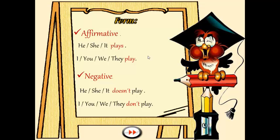Vamos a pasar a la formación de oraciones negativas. Negative sentences. How do we form negative sentences? We are going to use an auxiliary verb — in this case, doesn't for he, she and it — and the main verb without the S. And with I, you, we and they, we are going to use don't, with the verb without an S, of course.